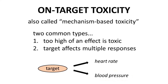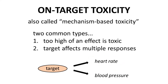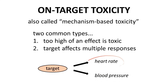Let's assume that our target also exerts some control over a patient's heart rate. That's a potential problem. In order to affect blood pressure, we will necessarily impact heart rate because of the nature of the drug target. Sometimes, selection of a different target can avoid on-target toxicity of type 2, but type 1 toxicity is often unavoidable.